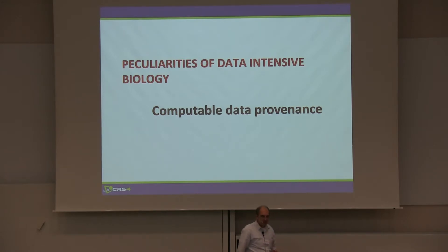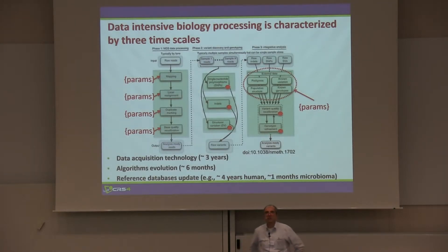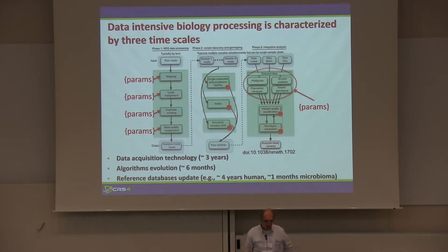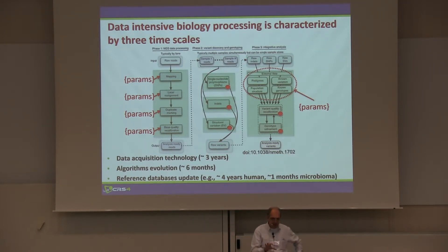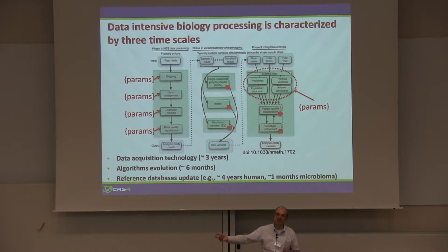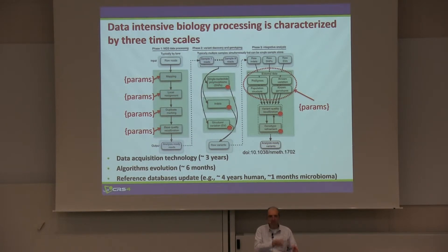Let's go to the next point — computable data provenance. What you see here is a typical pipeline workflow of a variant calling workflow. Basically, this object takes raw sequencing data at the beginning and the output has some potentially actionable result at the level of the variant calling results. That process is characterized by effectively three timescales. One has to do with the data acquisition technologies, which is basically about three to four years — meaning that maybe three years from now it will be better to use a next-generation sequencer which will be more precise.